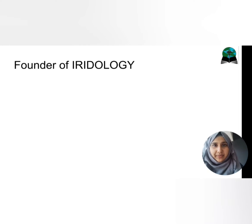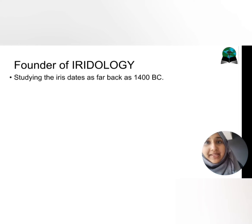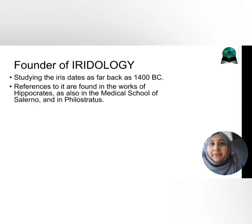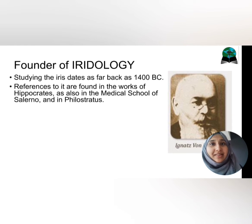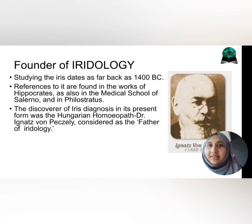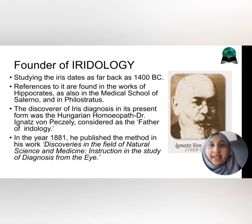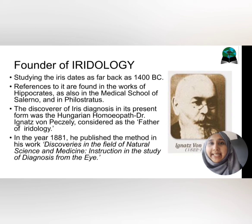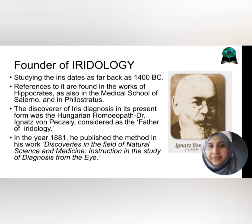Who is the founder of iridology? The study of iris dates as far back as 1400 BC. References to it were also found in the texts of Hippocrates. But the father of iridology as we know it today is Dr. Ignaz Juan Pigzili, a Hungarian homeopath. In the year 1881, he published his method, which he devised after years of comparative study, in his book, The Discoveries in the Field of Natural Science and Medicine: Instruction in the Study of Diagnosis from the Eye.